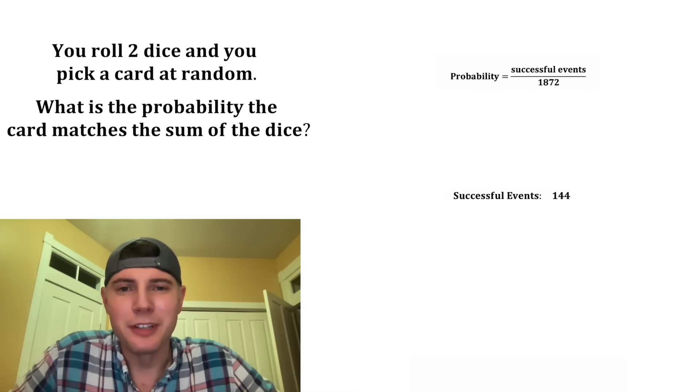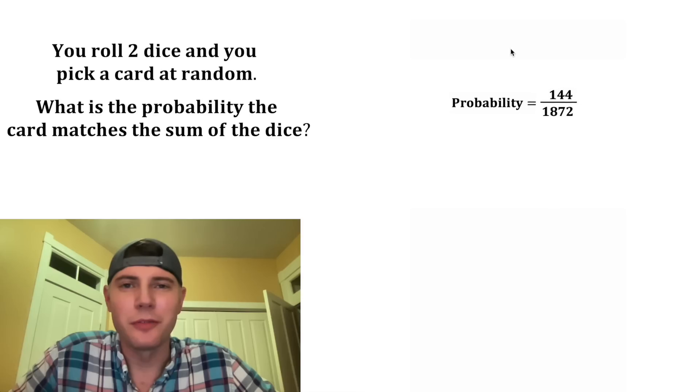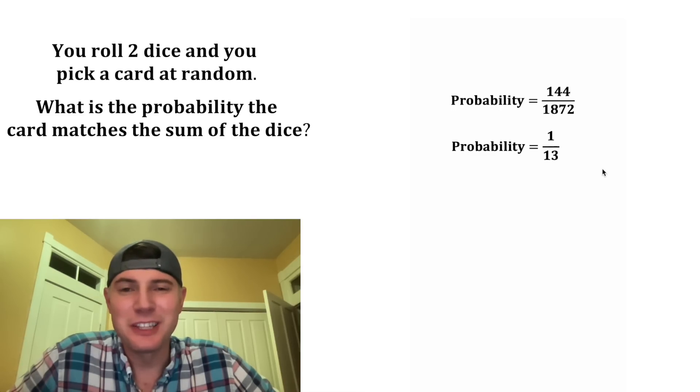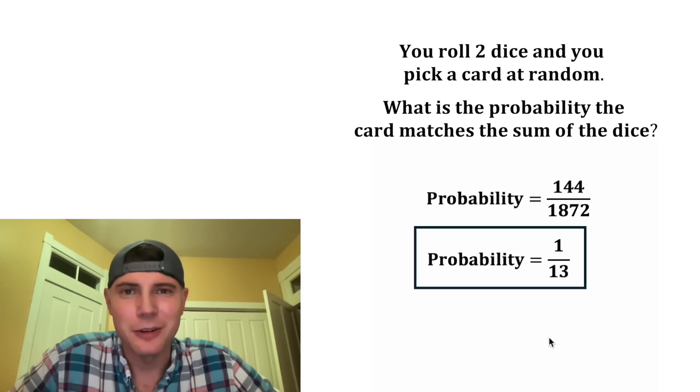Let's put that into our probability. In the place of the successful events, let's plug in 144. So the probability is equal to 144 over 1872. And that'll simplify it into 1 over 13. So the logic I explained at the beginning appears to be right. It was 1 13th. This is the answer to our question. Let's put a box around it. How exciting.